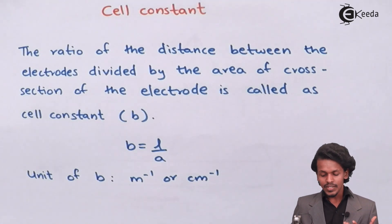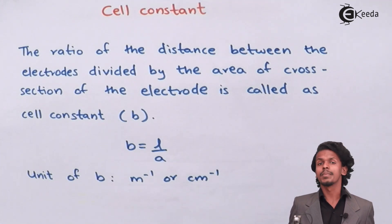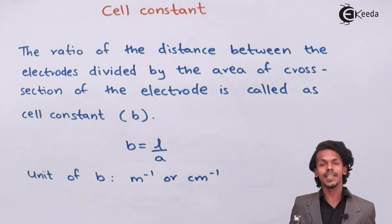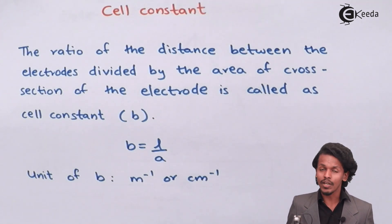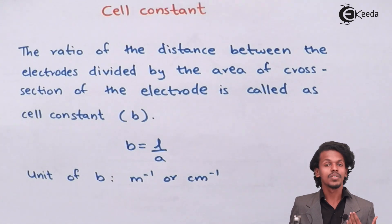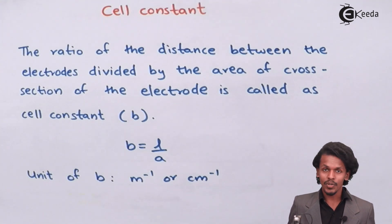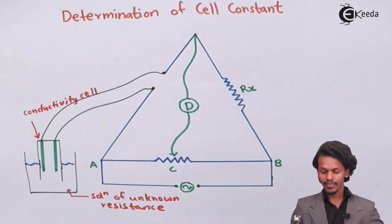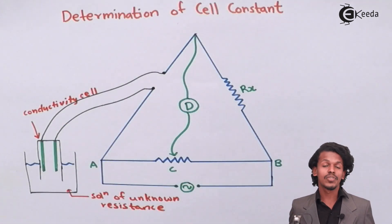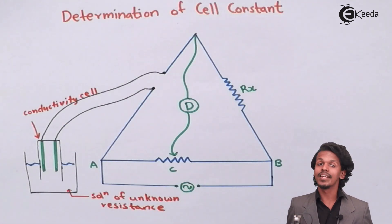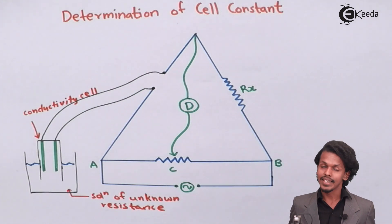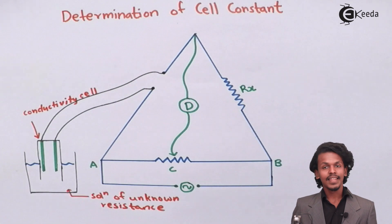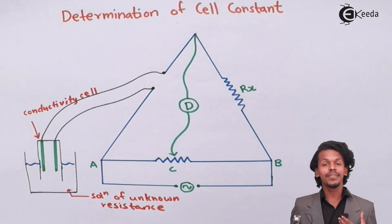How can we determine the cell constant for a particular cell? To determine the cell constant, we take the help of a Wheatstone bridge.